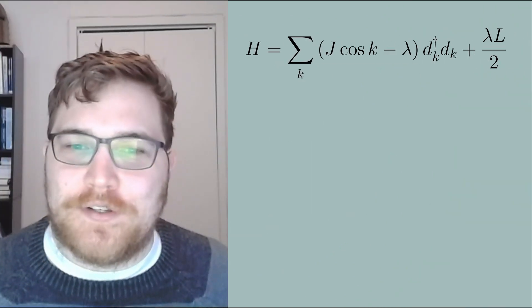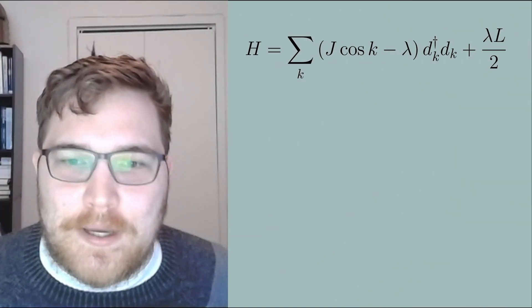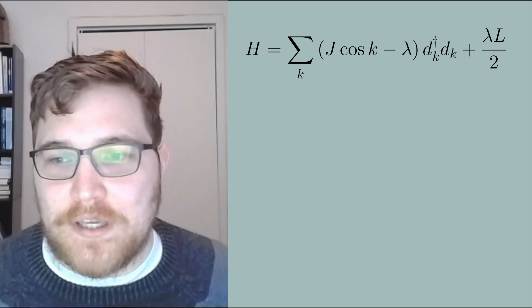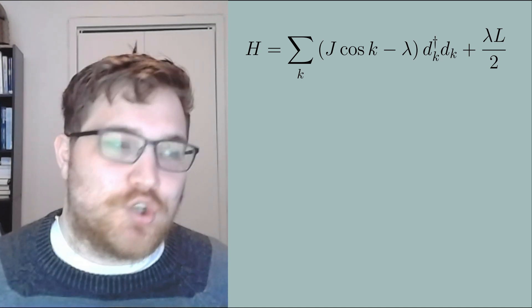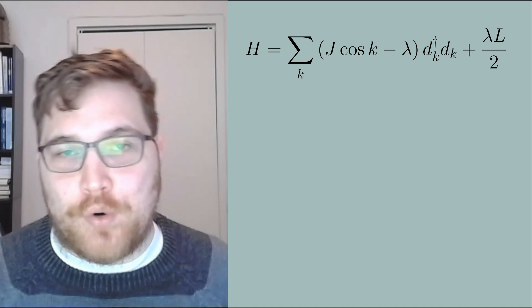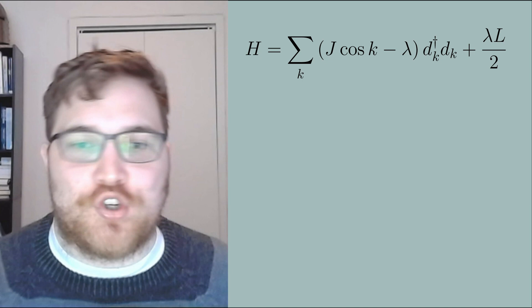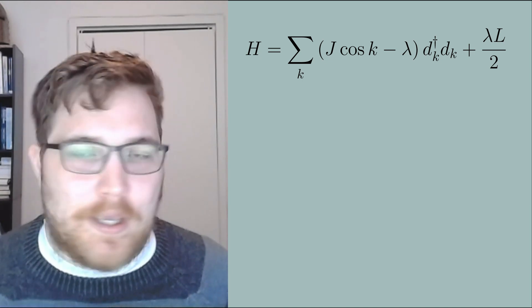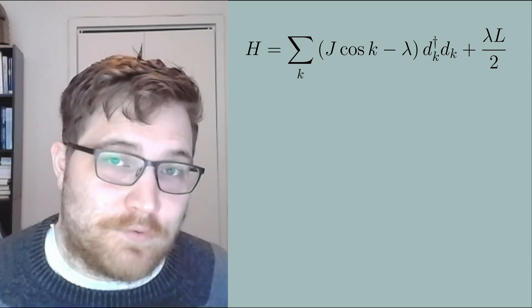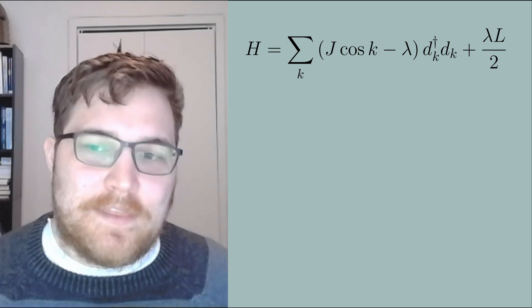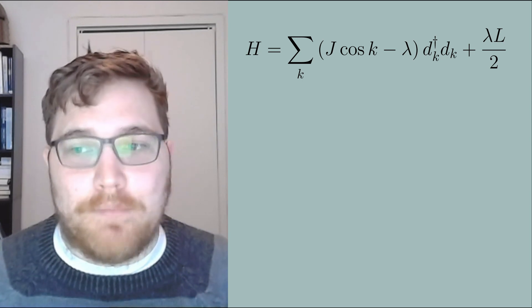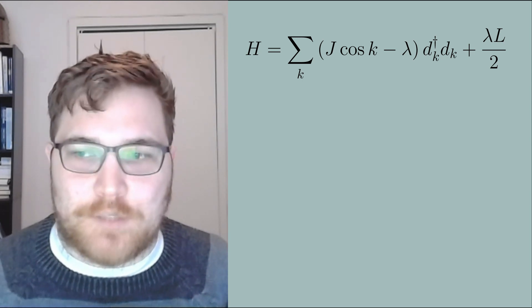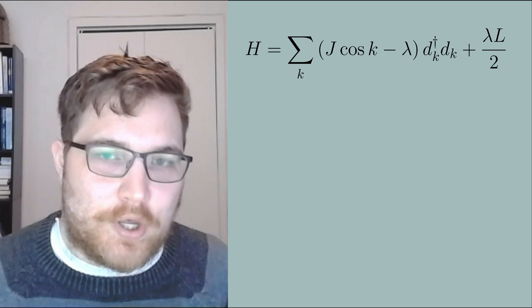The first thing we're going to do is we are going to remove the constant term lambda L over 2 because that is independent of the momentum operators so it just amounts to a constant shift of our Hamiltonian or of our matrix. So that just shifts the energy eigenvalues by a constant value and of course we're usually interested in differences of eigenvalues. And the second we are going to denote our eigenmodes or these cosine expressions with the symbol epsilon k.